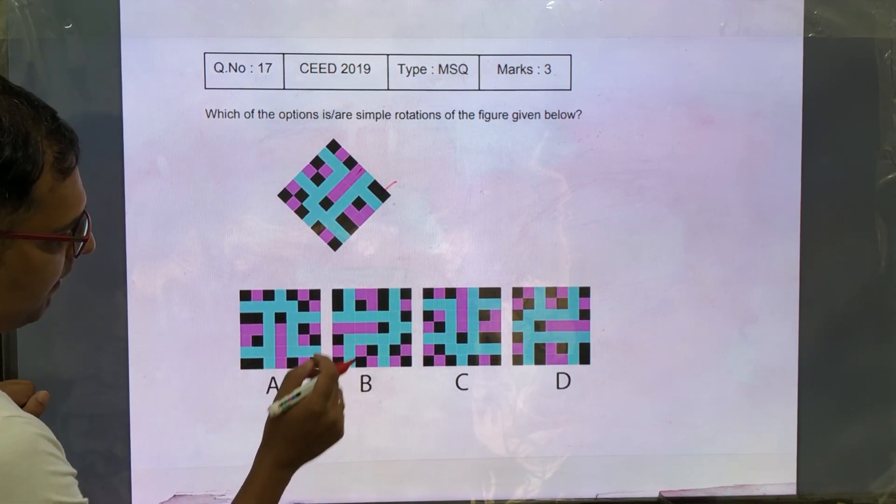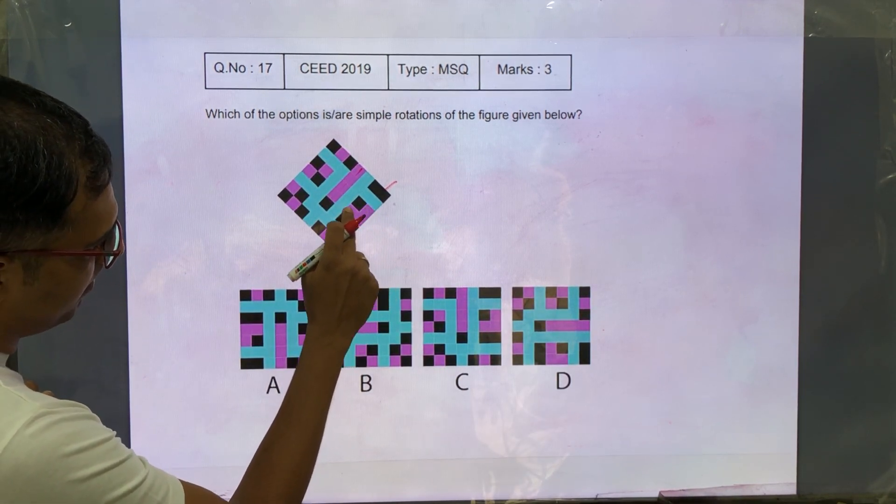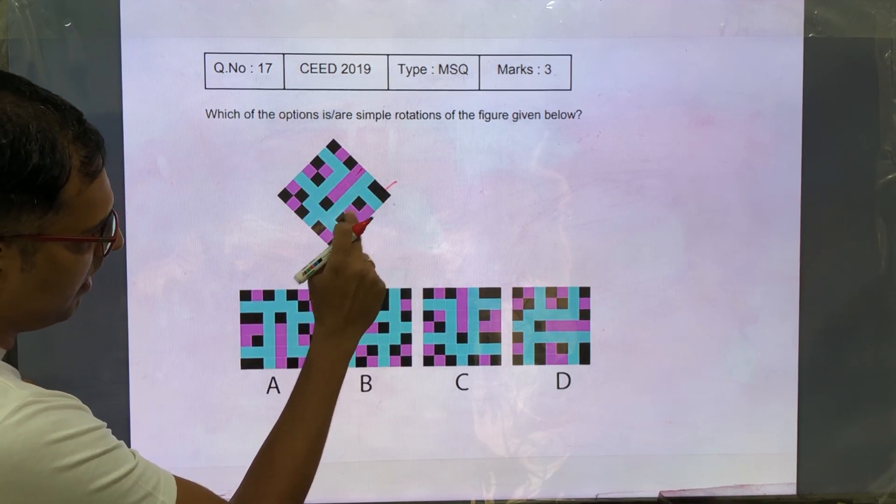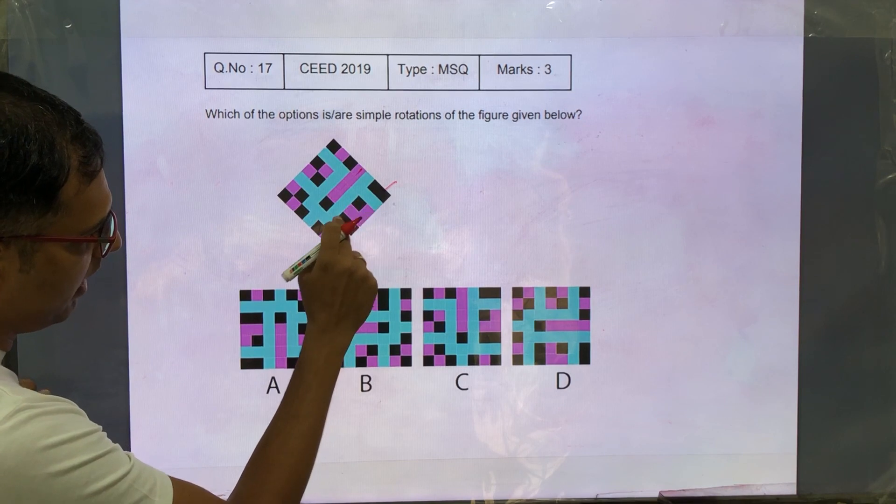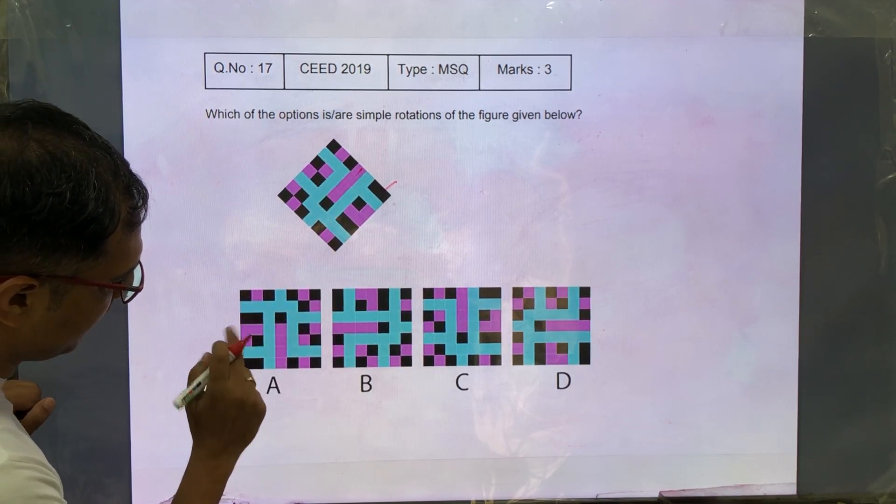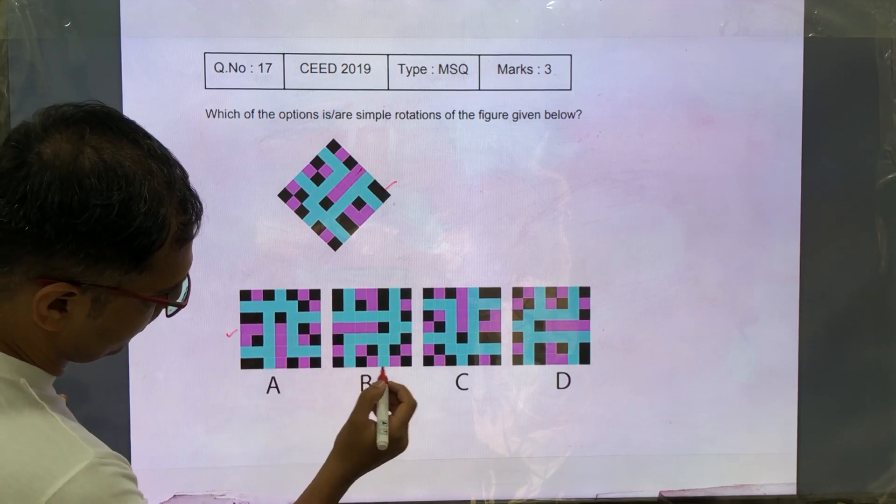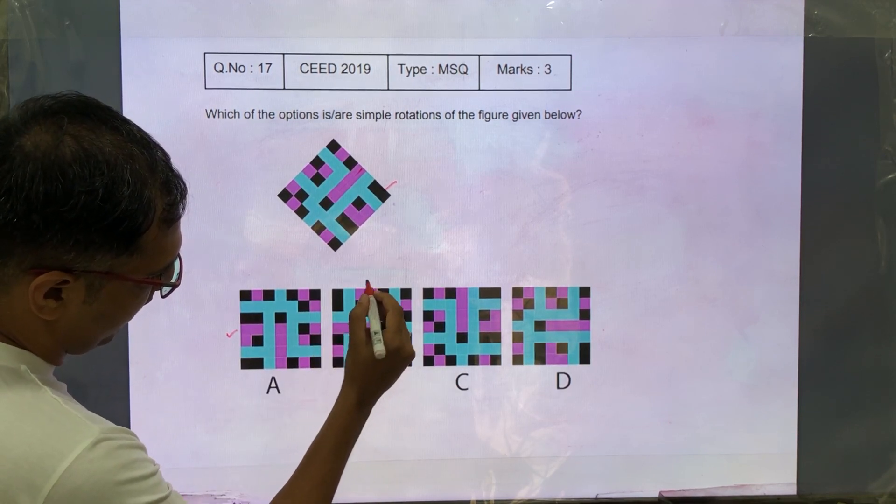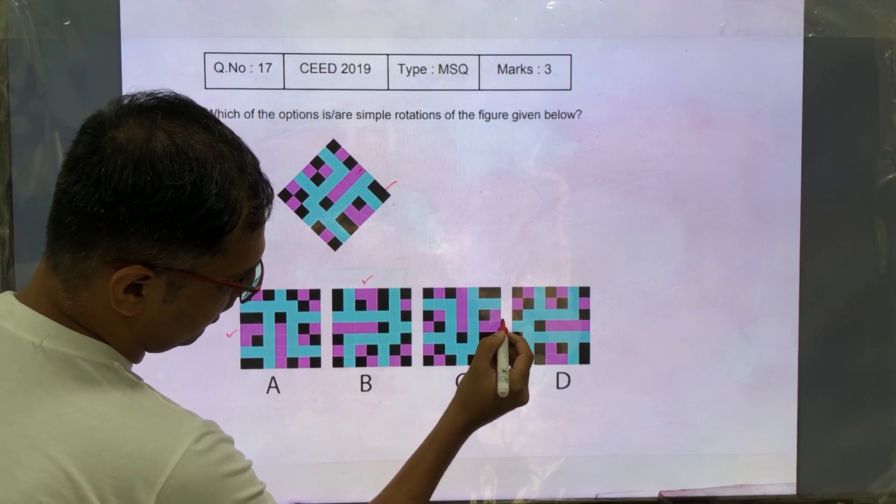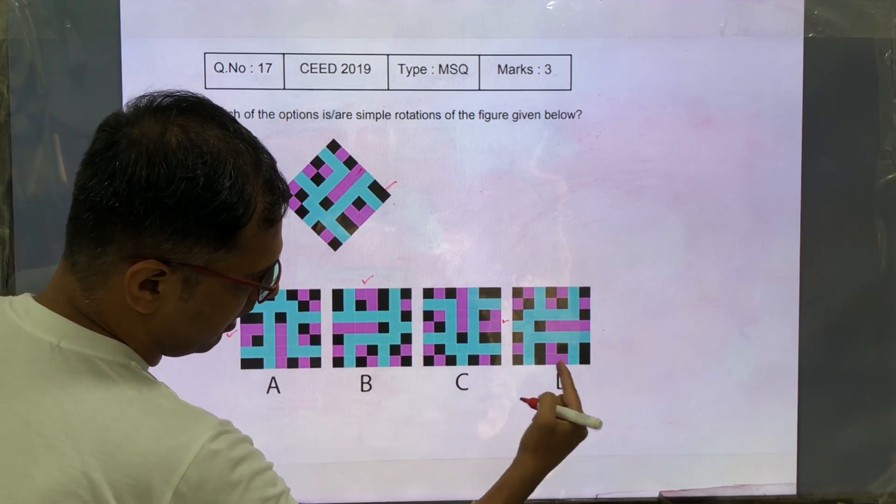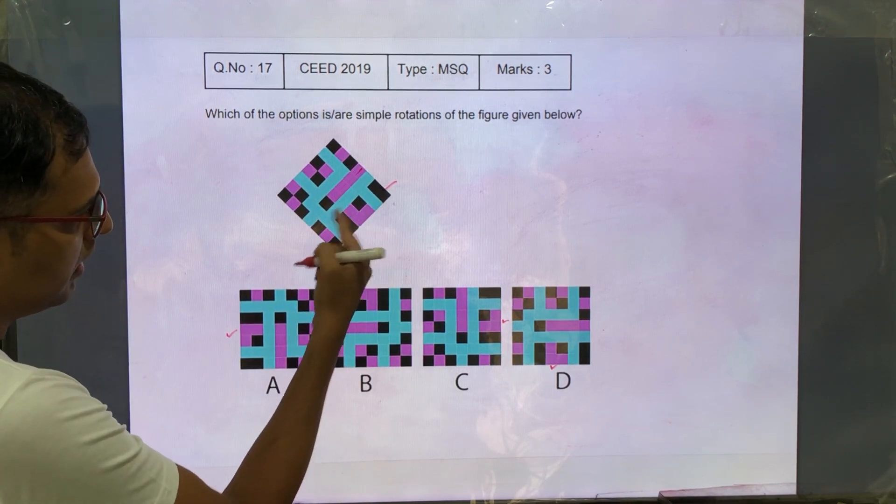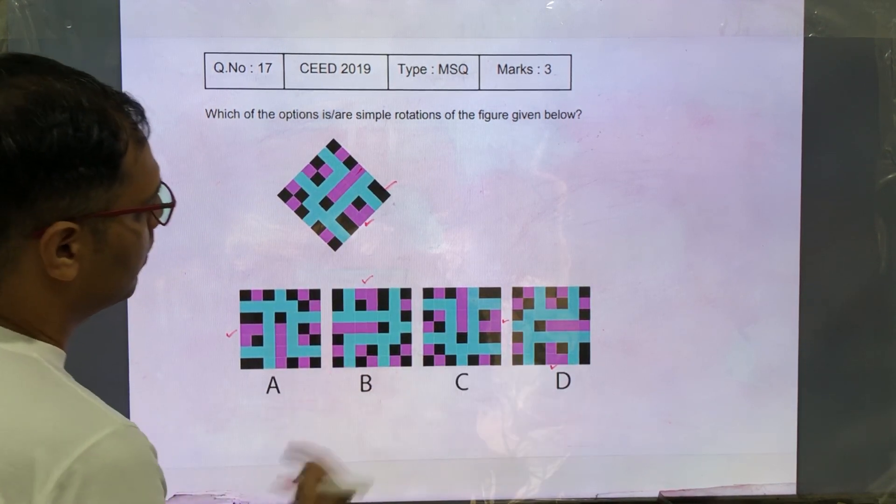Okay. After that, we have this pink L shape pointing to these 2 browns and then a brown and 2 browns here. Let's see if we can find it. So we have that here, it is correct. Next to the brown, we have this L shape which is correct. Next to the brown L shape is correct. Again here, it is correct. Alright. So this is also done in all the 4 options.